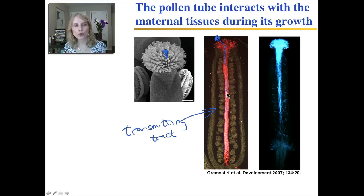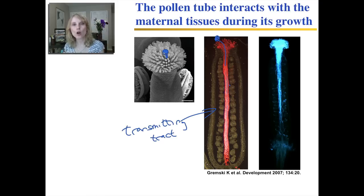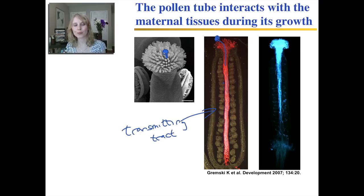Inside the transmitting tract are lots of nutrients. For a cell to be able to grow and elongate, it needs energy, so the transmitting tract provides energy for the pollen tubes to grow. It also provides signaling molecules. Cell signaling needs to occur for the pollen to know where the ovules are — the ovules need to signal to the pollen, essentially saying 'come over here, bring the sperm right here.'